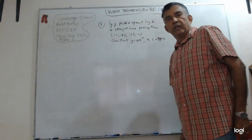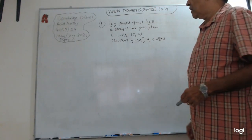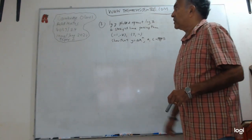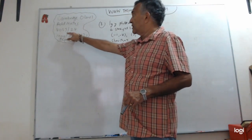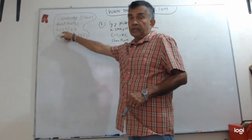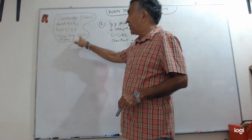Hi everyone, welcome to TheMathsCenter.com. This is the third video we are doing on this exam paper, Cambridge O-Level Additional Mathematics subject code 4037, and this is the May June 2021 paper, paper 2.